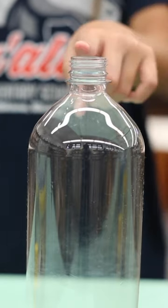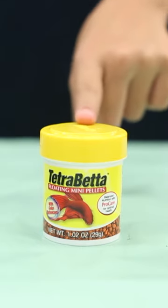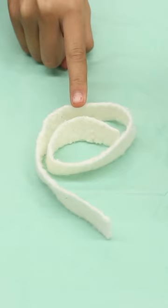To do this, you'll need a clear plastic bottle, water purifier, a small fish, fish food, gravel, a plant, and a cotton wick.